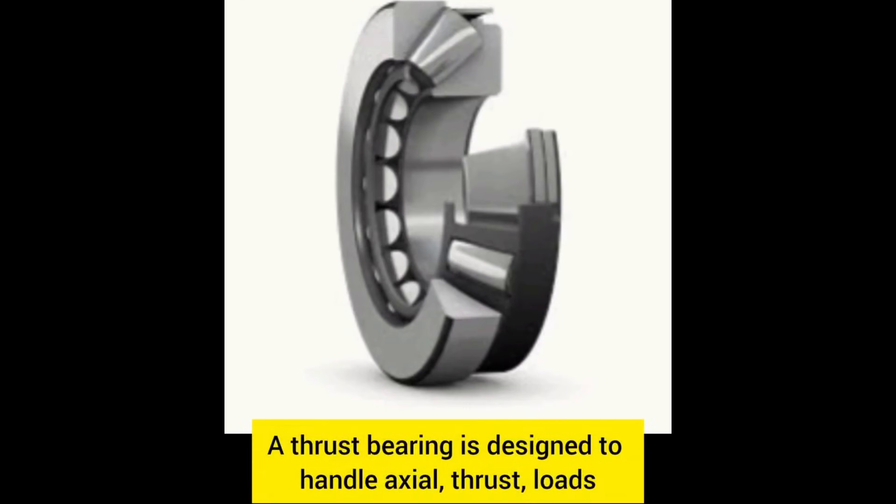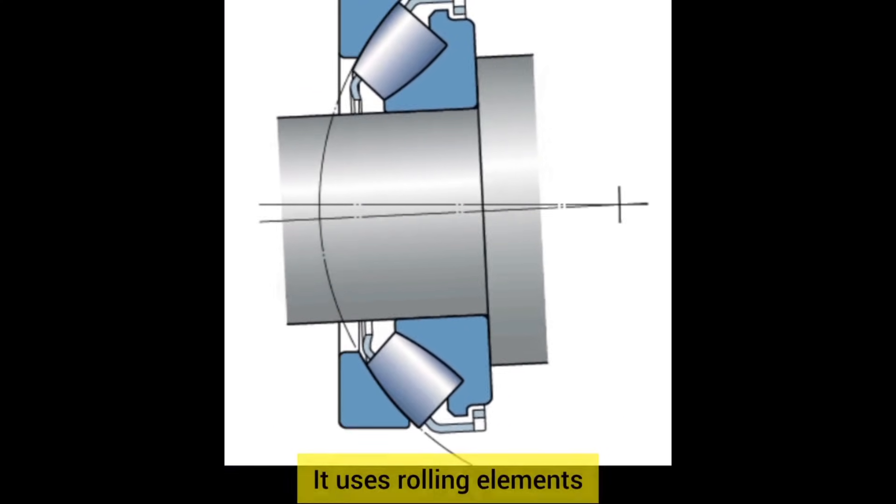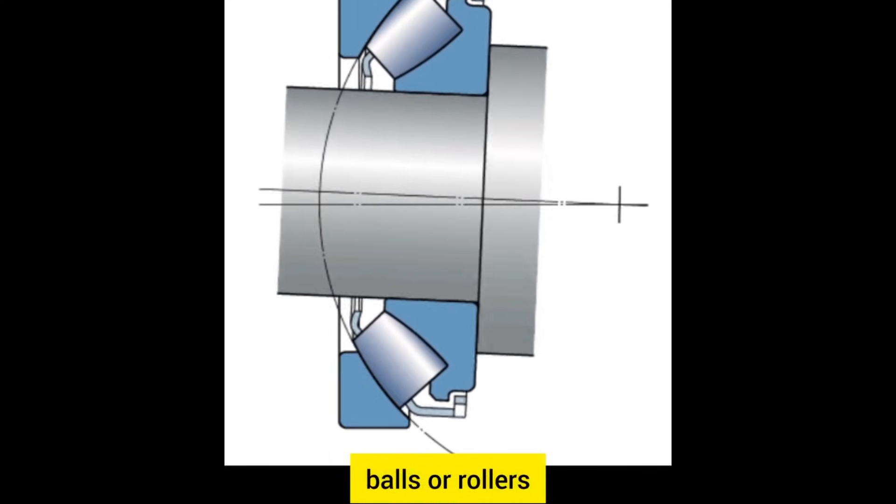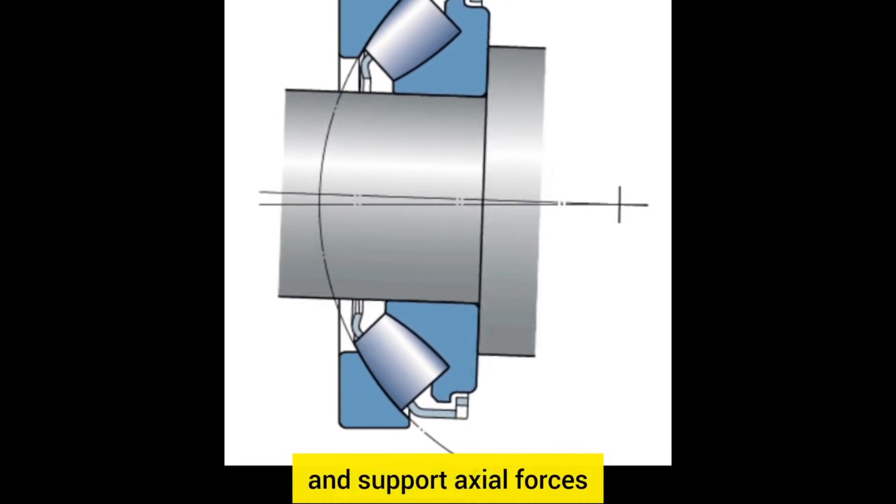A thrust bearing is designed to handle axial thrust loads, supporting rotational parts like shafts. It uses rolling elements—balls or rollers—sandwiched between bearing races to reduce friction and support axial forces.